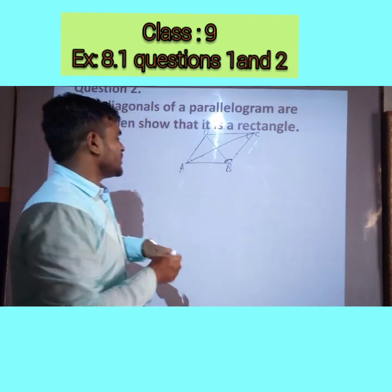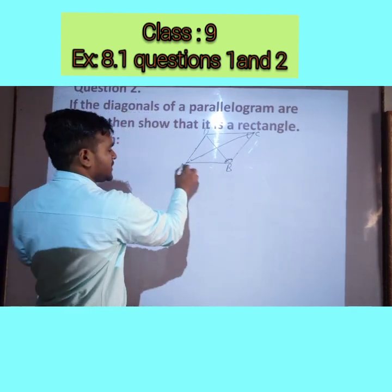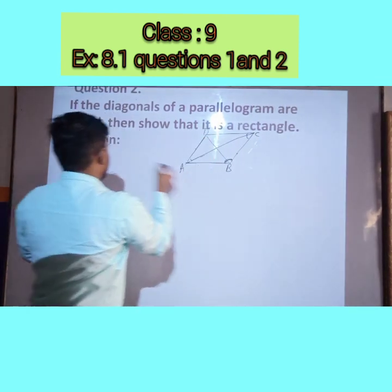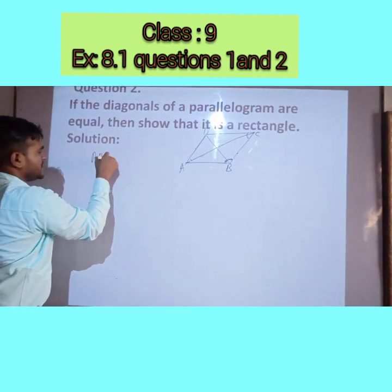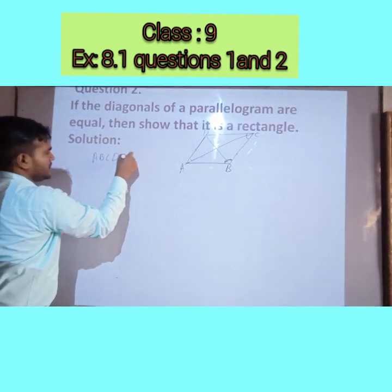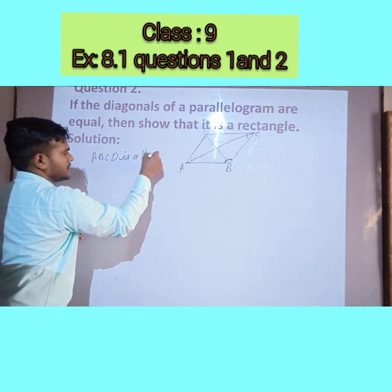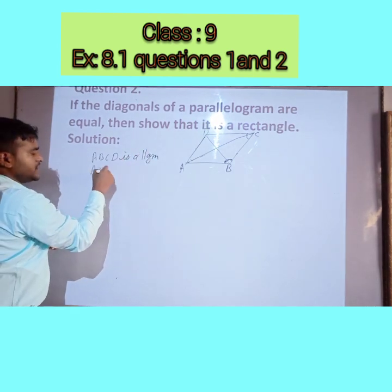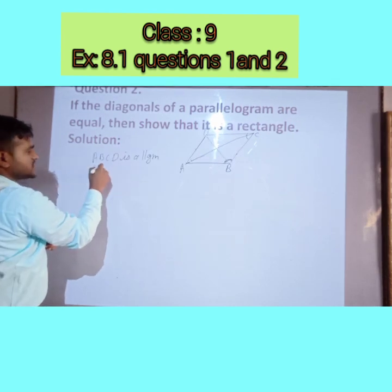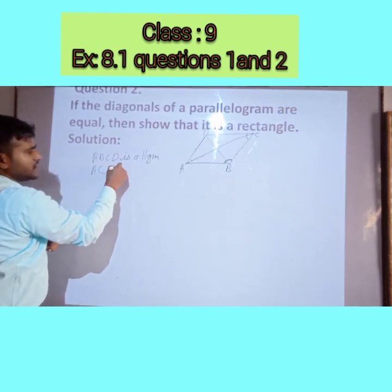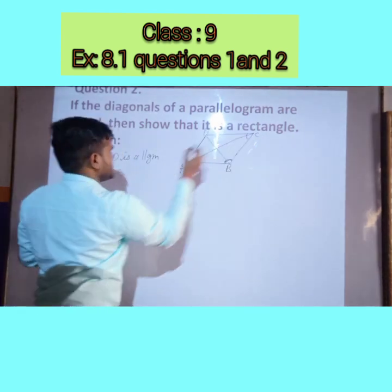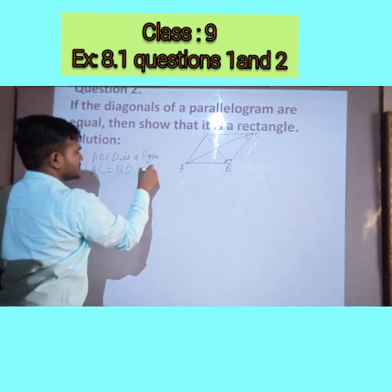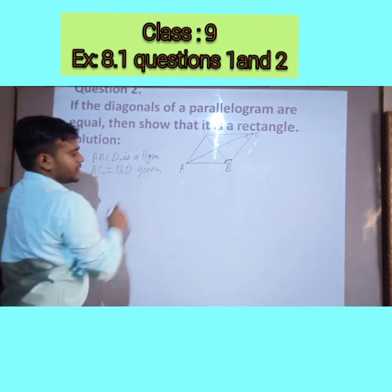So how will we show this? First we will consider parallelogram ABCD, where diagonal AC is equal to diagonal BD — that is given.